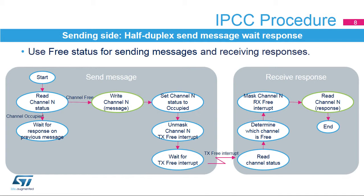The half-duplex procedure allows the transfer of a message from a sending side to a receiving side, followed by a response sent from the receiving side back to the sending side, using a single shared buffer. In the half-duplex procedure, the sending side will first check the channel status flag. If the channel status flag indicates the channel is occupied, or flow-off — due to the receiving side not yet having sent a response to a previous message — the sending side waits for the response, a software flag. When the channel is free, the message can be written in the channel data buffer. Subsequently, the channel status flag is set to occupied, which triggers a channel-occupied interrupt for the receiving side, and the channel-free interrupt is masked. The channel-free interrupt indicates the availability of the response sent by the receiving side.